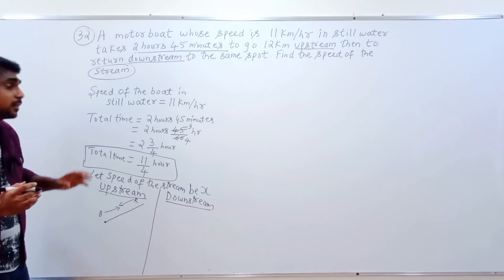Cross multiplying: 11 into (121 minus x squared) equals 4 into 264. So 121 minus x squared equals (4 × 264) divided by 11, which equals 96. Therefore x squared equals 121 minus 96, which equals 25.